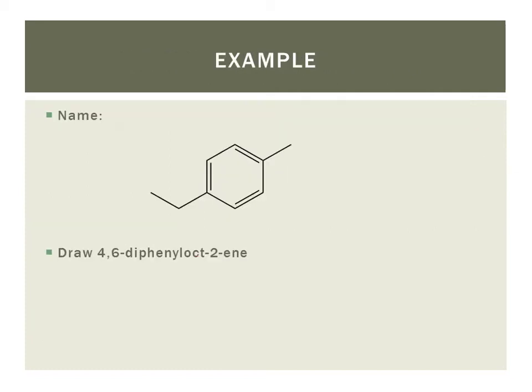So in our naming example here, we can see that both alkyl groups are small. So we're going to use the parent name benzene and we are going to name both of our alkyl groups as substituents. Now we have a two-carbon chain, which is ethyl, and we have a one-carbon chain, which is methyl. And we are going to number them just like we did with our cyclic hydrocarbons. So we are going to number one, two, three, four, five, six.